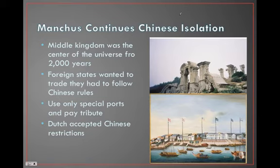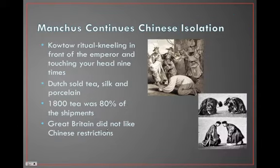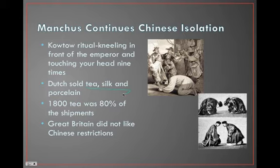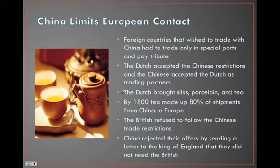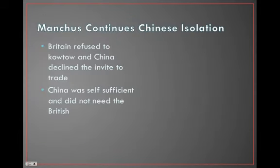They stayed isolated with only special ports. The Dutch accepted the Chinese terms, and the rule was called kowtow — you had to bow down and show respect to the Chinese. The whole theme is the Chinese wanted respect and to be treated like the powerful country they were. The Dutch did it, so they got tea, silk, and porcelain. The British said they weren't doing that and refused, so China said: you won't bow, you won't show respect, you ain't getting any of our stuff.